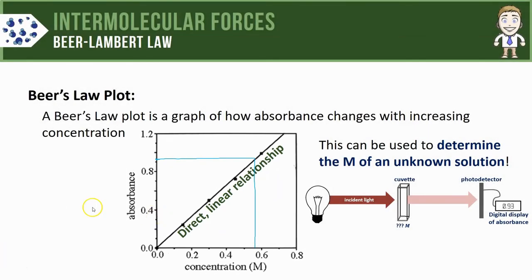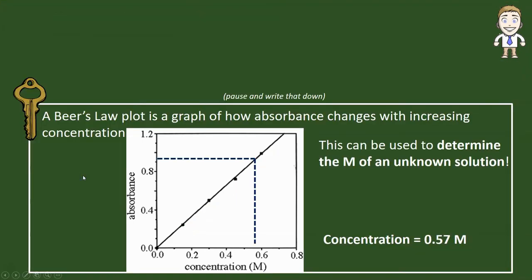concentration value. Based on the fact that the solution has an absorbance of 0.93, I could estimate that the concentration of my solution is somewhere around 0.57 molarity. This is generally how we use Beer's Law plots.